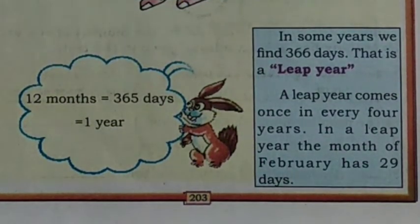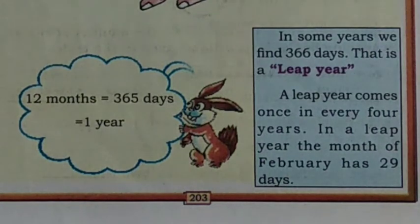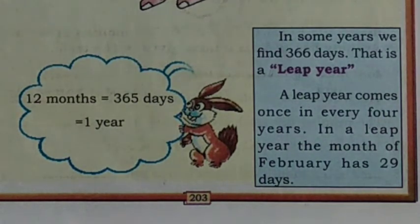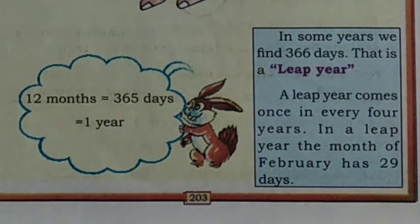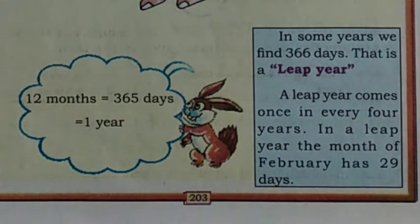Children, 12 Months is equal to 365 Days, which is equal to 1 Year. In some years we find 366 Days. That is a Leap Year. A Leap Year comes once in every 4 years. In a Leap Year, the Month of February has 29 Days.